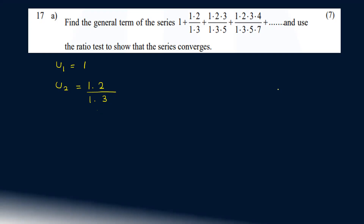So if you apply to a general term, the denominator takes values 1, 3, 5, and so on. The pattern 2k minus 1 gives: when k equals 1, 2(1)−1 = 1; when k equals 2, 2(2)−1 = 3. So 2k−1 represents the denominator pattern.